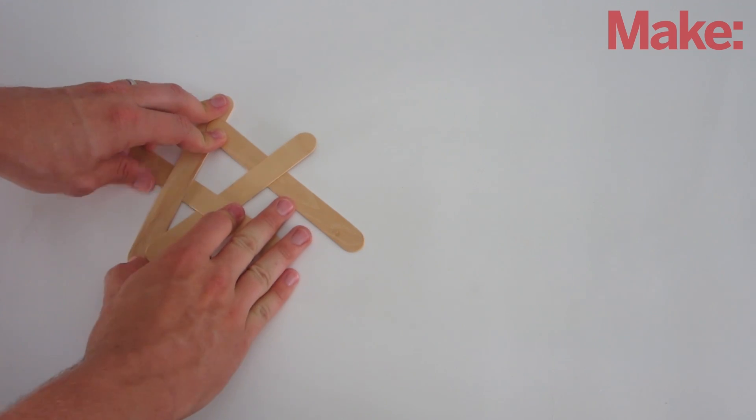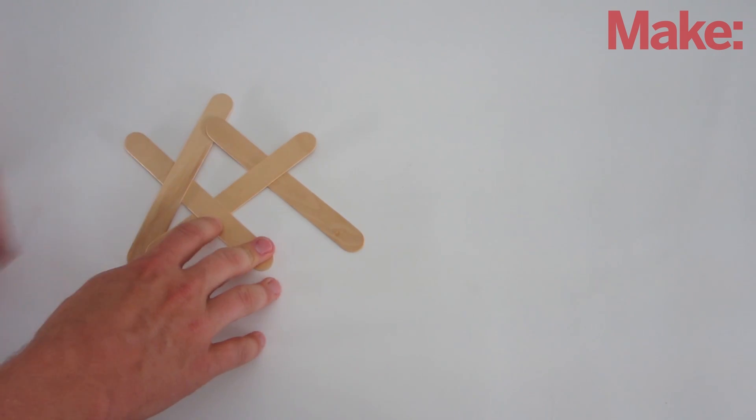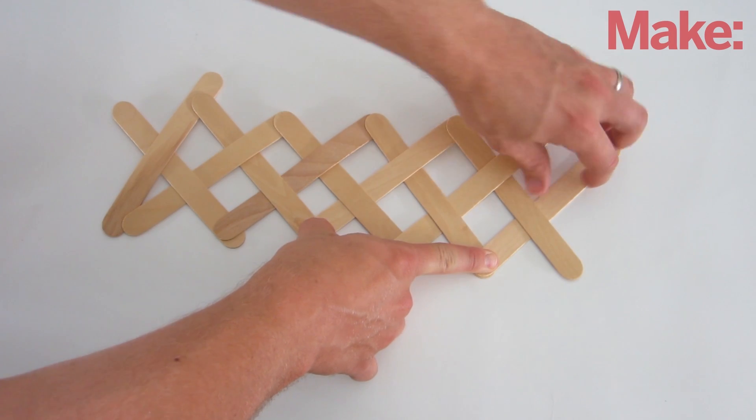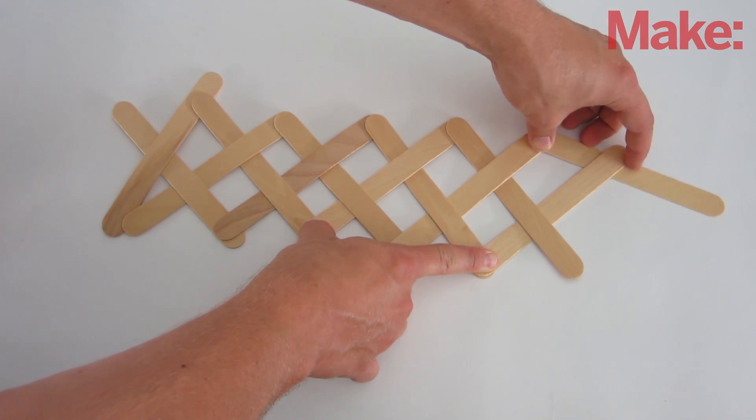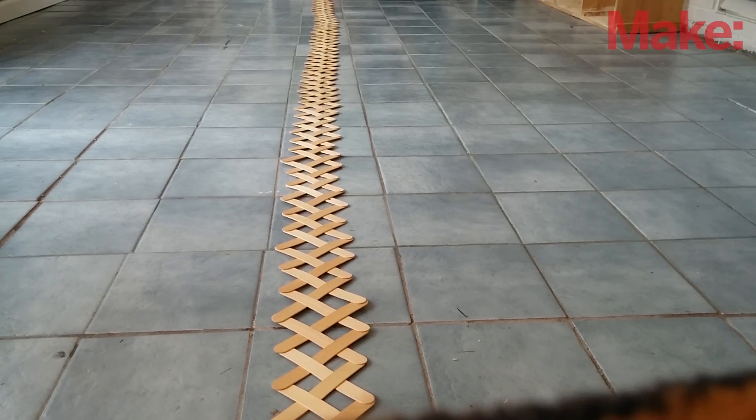Now weave a fourth stick between the first three on the left side to lock this end in place. Continue adding sticks to the right side, weaving them together at 45 degree angles until you have a long chain. Then set it off.